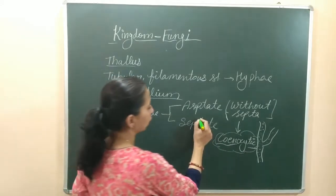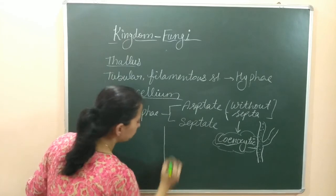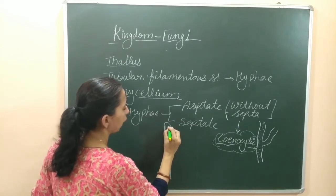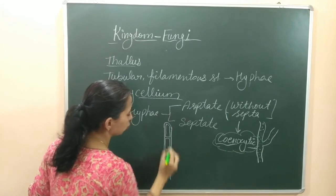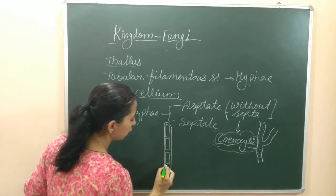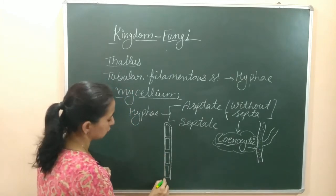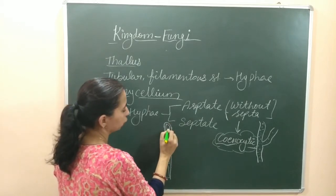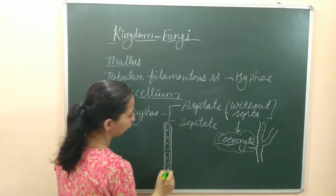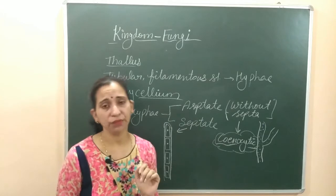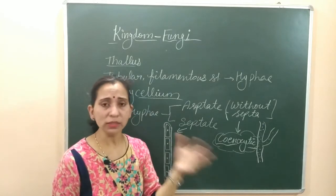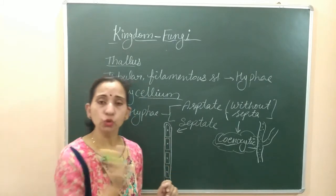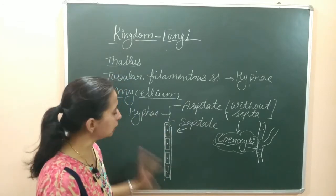Whereas septate hyphae are formed in such a manner where after nuclear division, cell division also occurs. The structures formed have one or two nuclei — they have a uninucleate or binucleate type of structure. In septate hyphae, cell walls form between the structures, and the nucleus present can be one or in some cases two.